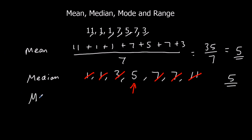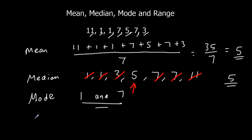The mode is the most common number. In this instance, there are two 1s and there are two 7s, so there are two modes — two numbers that occur the most. So the modes are 1 and 7. And the range: biggest number take away the smallest — 11 take away 1, which is 10.